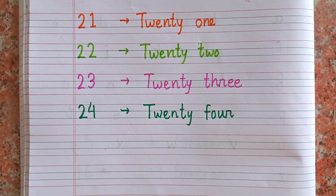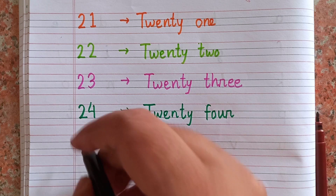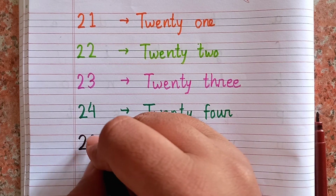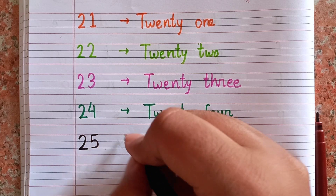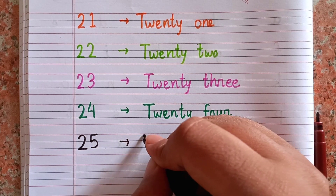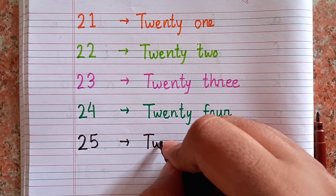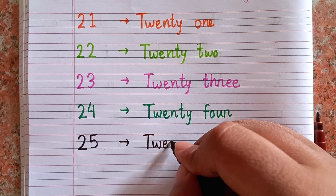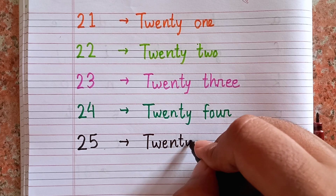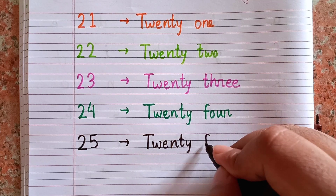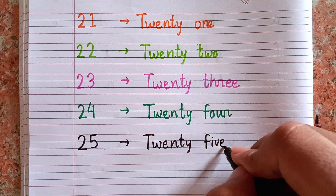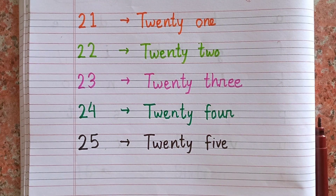After twenty-four, the next number is twenty-five — 2-5. The spelling of twenty-five is T-W-E-N-T-Y F-I-V-E. 25.